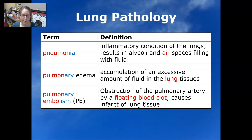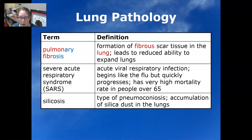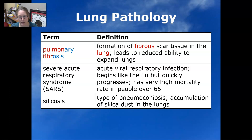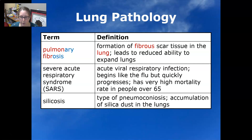Pulmonary fibrosis is the formation of fibrous scar tissue in the lung, leading to a reduced ability to expand the lungs. Severe acute respiratory syndrome, or SARS, is related to MERS and includes SARS-CoV-1 and SARS-CoV-2, the latter associated with COVID. It is an acute respiratory infection that begins like the flu but quickly progresses and has a very high mortality rate in people over 65.